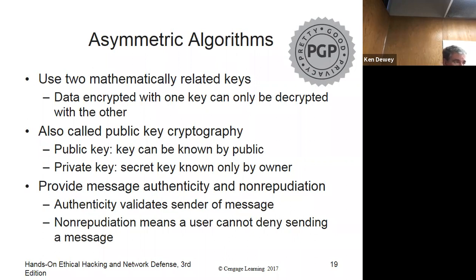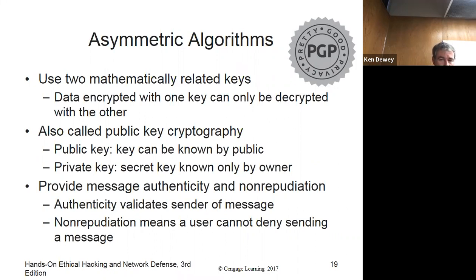They work in a pair. If he encrypted it with my public key and signed it with his key, then I would download his public key. I'd know it came to me because it was encrypted with my key, and I'd know it came from him because he signed it with his key. So it gives you non-repudiation — something missing in symmetric. Asymmetric is a lot slower than symmetric.